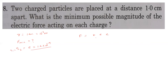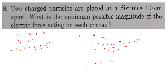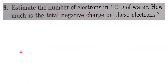With q1 = q2 = e = 1.6×10⁻¹⁹ C and r = 10⁻² m: F = k·e² / r² = (9×10⁹ × (1.6×10⁻¹⁹)² ) / (10⁻²)². Simplifying, the minimum force is 2.3×10⁻²⁴ newton. This is the minimum electric force between two particles separated by 1 centimeter.